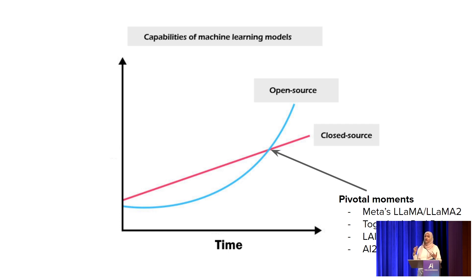Examples of pivotal moments are Meta's LLaMA and LLaMA 2, or the RedPajama from Together, and similarly AI2's Dolma dataset. Datasets for training are really good artifacts that can help accelerate progress in open source.